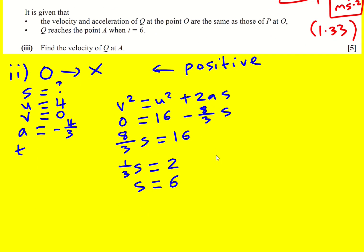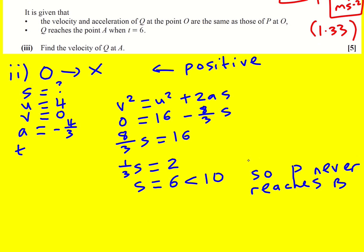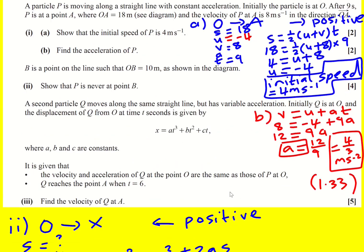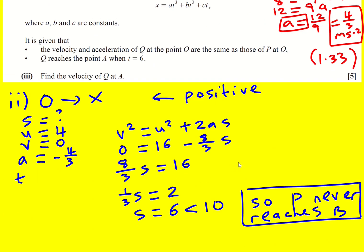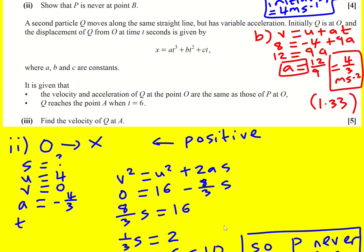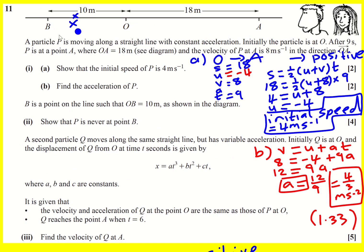Now we just need to write a conclusion: S equals 6, and this is less than 10, so P never reaches B. I did see in the mark scheme another way where you assume S equals 10 and try to solve an equation that has no solution. But I think this is a solid method — just finding out how far it's actually gone. It's quite useful to know it doesn't actually get that close.